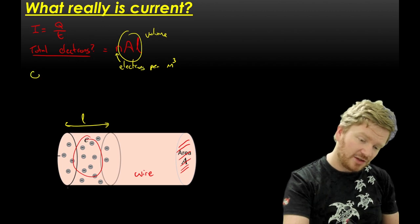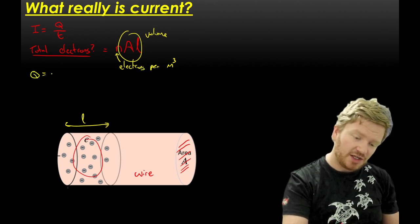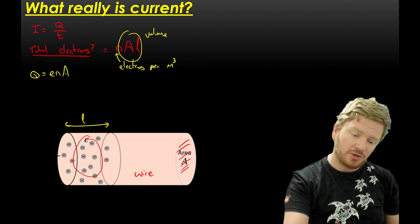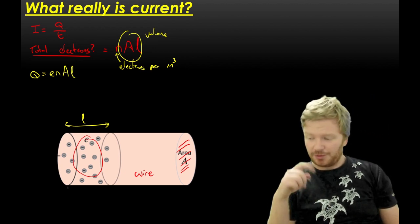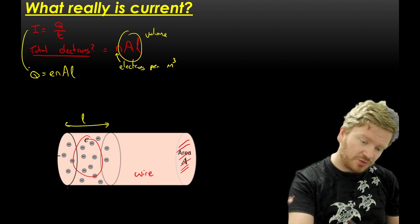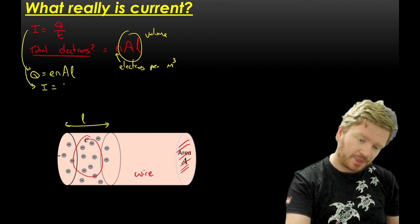Why is that useful? It tells me what Q is. I can say that Q is equal to the charge on a single electron multiplied by the number of electrons per cubic metre multiplied by the volume. Substituting these together, I can get current is equal to E·N·A·L over T.